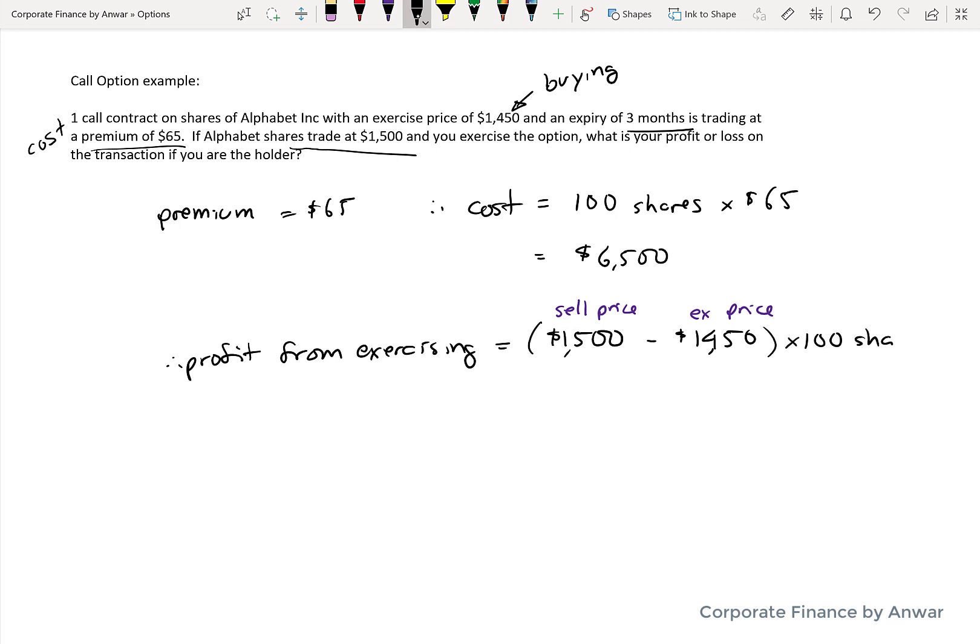So therefore your net profit on this whole transaction from buying and exercising is going to be the profit from exercising which is $5,000. And that doesn't always happen. You could have a situation where the option expires and you don't exercise it because it doesn't make sense to do so.